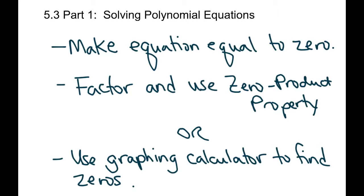First, make sure whatever equation you're working with is equal to zero. We had to do the exact same thing with quadratics. Then we're going to factor and use the zero product property. Or, if you're not feeling comfortable with factoring, we can utilize the graphing calculator to help us find the zeros the same way we did with quadratics.